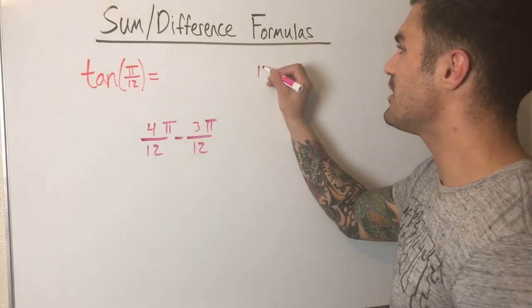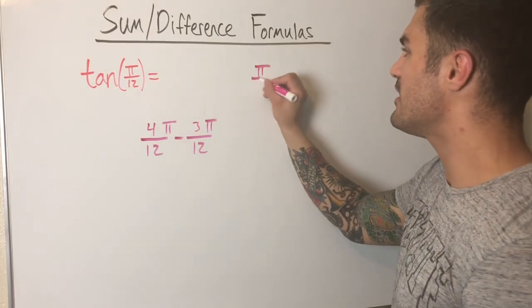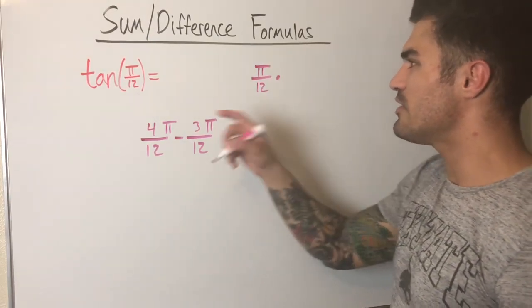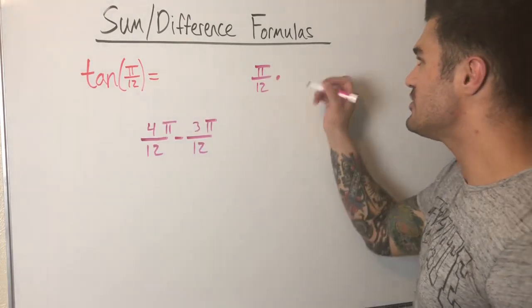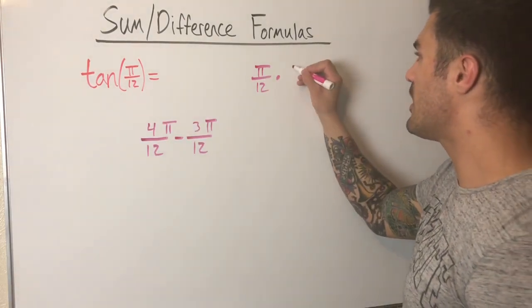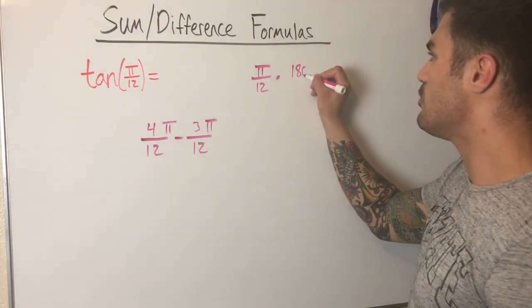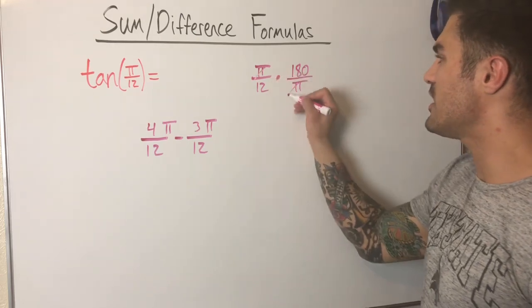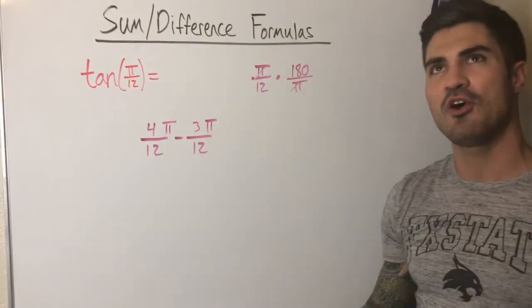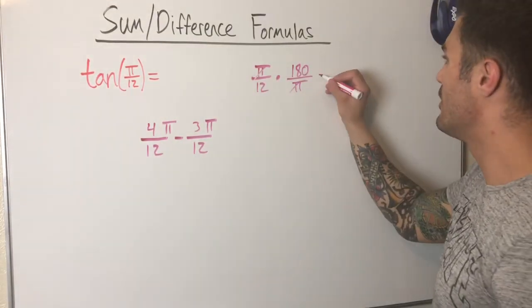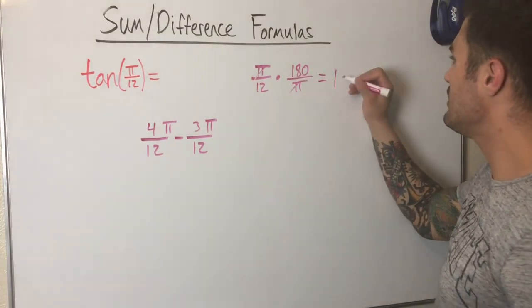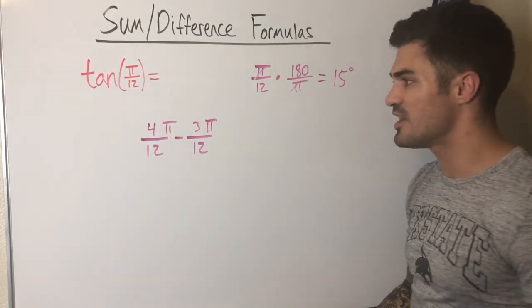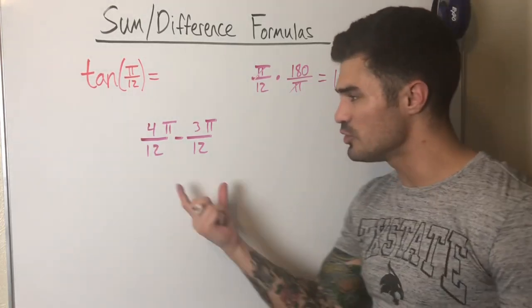To convert: take π/12 and multiply by 180/π. The π's cancel, leaving 180/12 = 15 degrees. So π/12 corresponds to 15 degrees.